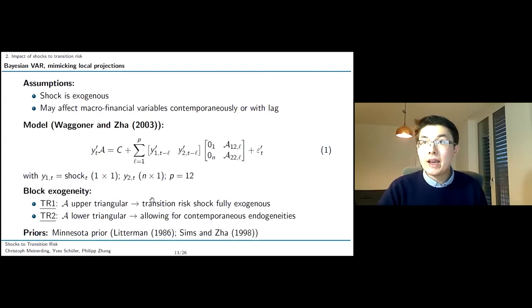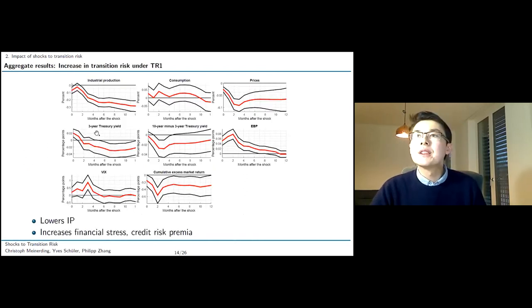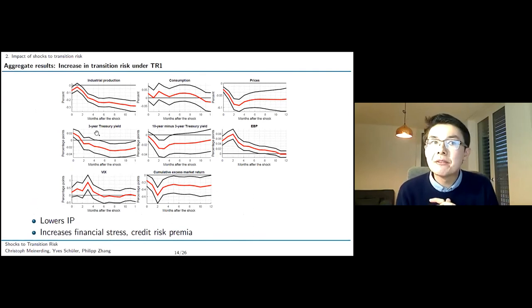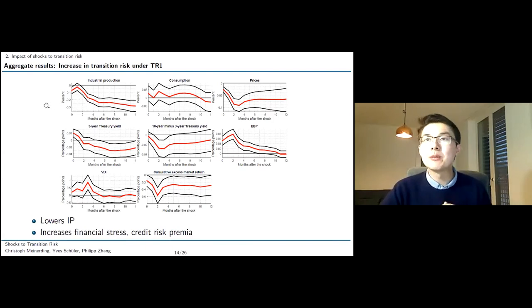Now here you can see the first set of our results. These impulse responses are for an increase in transition risk under the TR1 scheme. The values that you see here are to be thought of more as an upper bound. We don't show pictures here for TR2, but the effects are same, a bit smaller, but still significant, especially for industrial production. As we can see, US industrial production decreases actually quite a bit in response to a positive shock to transition risk. We can also see a decrease in the slope of the term structure. And we also see an increase in credit risk premium on the bond market, as well as an increase in the VIX and a reduction of stock market returns in general. This picture indicates our shocks are of contractionary nature, they increase financial stress as well as credit risk premium.